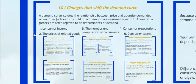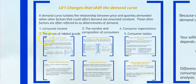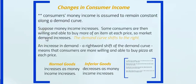A demand curve isolates the relationship between price and quantity demanded when other factors that could affect demand are assumed constant. These other factors are called determinants of demand: consumer income, the price of related goods, the number and composition of consumers, consumer expectations, and consumer tastes.